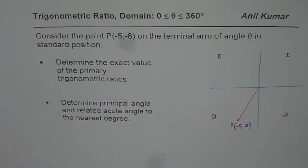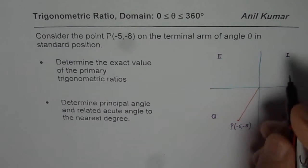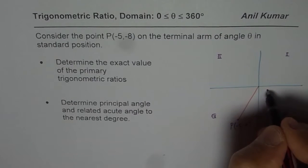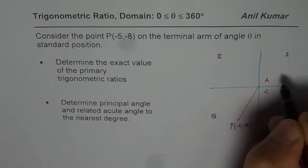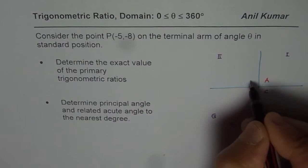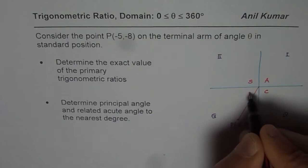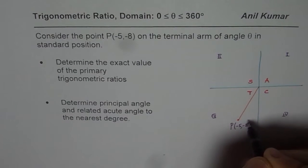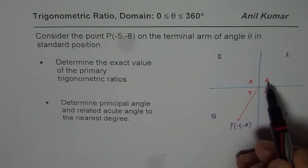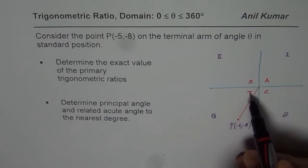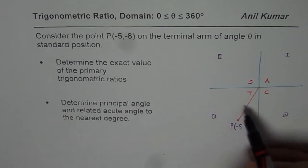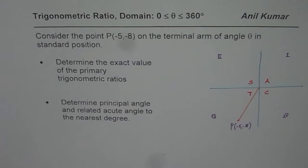Let me also write down the CAST rule. We know cosine is positive in quadrant 4, all ratios are positive in quadrant 1, sine is positive in quadrant 2, and tangent is positive in quadrant 3. A mnemonic for this is 'All Students Take Calculus' or 'All Silver Tea Cups'. We at least know in which quadrant each ratio is positive.